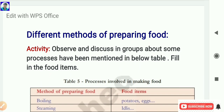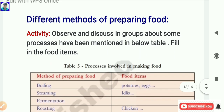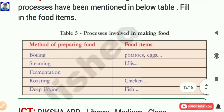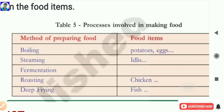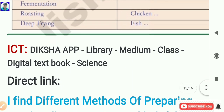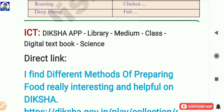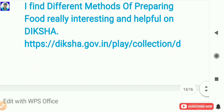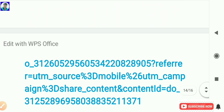The next concept is different methods of preparing food. Activity: Observe and discuss in groups about some processes mentioned in the table below. Fill in the food items for each method of preparing food in the table. They can also use the digital content in the Diksha app for further exploration, or the teacher can send a direct link so children can watch the content using those links.